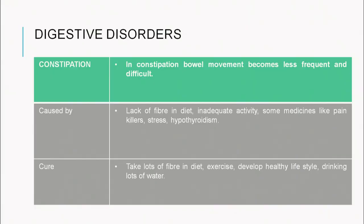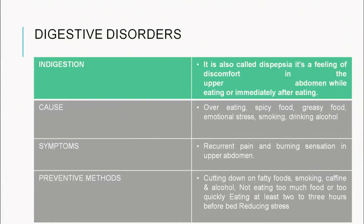The next disorder is constipation, where bowel movement becomes less frequent and difficult. Causes include lack of fiber in the diet, inadequate water intake, reaction to certain pain killers or medicines, stress, or hypothyroidism. The cure is to take lots of water and fiber in your diet. Another disorder is indigestion, also called dyspepsia — a feeling of discomfort in the upper abdominal region. Causes include overeating or consuming very fatty food.